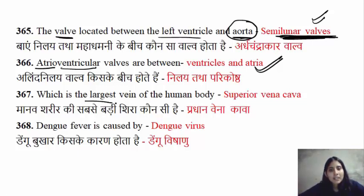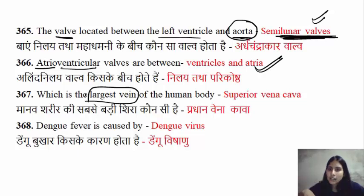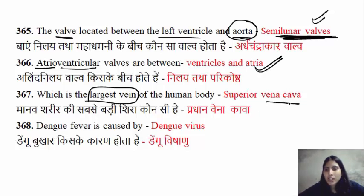The largest vein in the body includes the superior vena cava and the inferior vena cava. The superior vena cava carries blood from the head and neck. The inferior vena cava carries blood from the legs and lower body. If asked about the largest vein, you can answer vena cava.